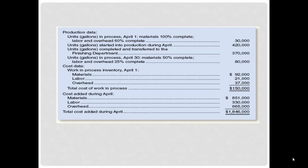This is the production data. I would caution you to print this out so you can use it as a reference tool as we go through the example. We have the number of units in the department at the beginning of April, the units started into production during April, the units completed and transferred out, and the units in process at the end of April. We also have the cost data: materials, labor, and overhead for beginning work in process, and then the cost of materials added during the month of April.